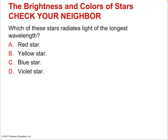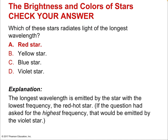Which type of star radiates light of the longest wavelength? Since the speed of light equals wavelength times frequency, and the speed of light is constant at 3×10⁸ m/s, if frequency is low, wavelength must be high. Red stars have the lowest frequency because they're the coolest, so red stars must have the longest wavelength.